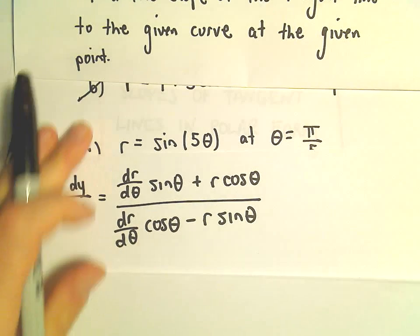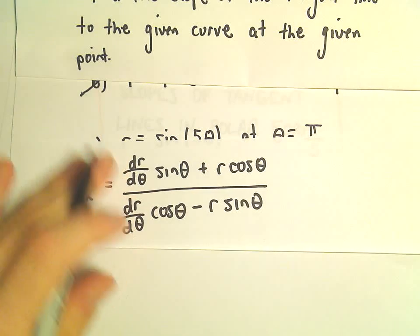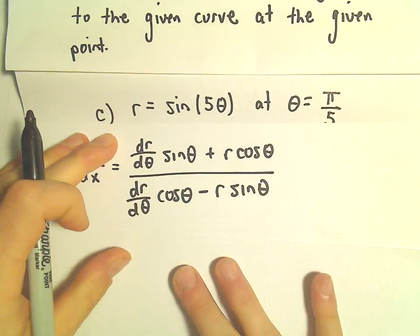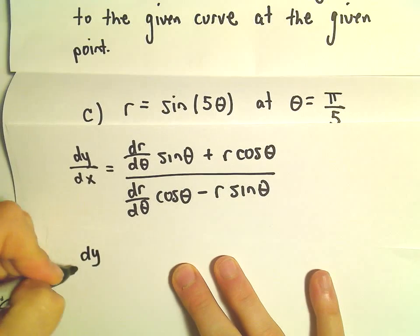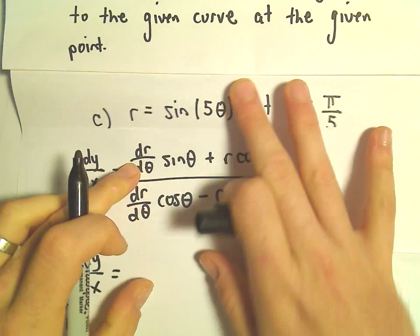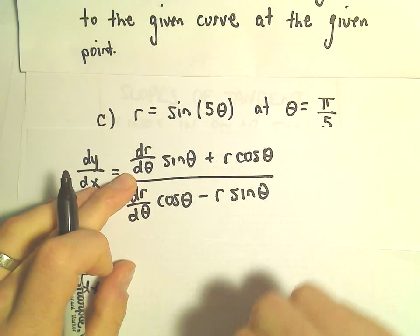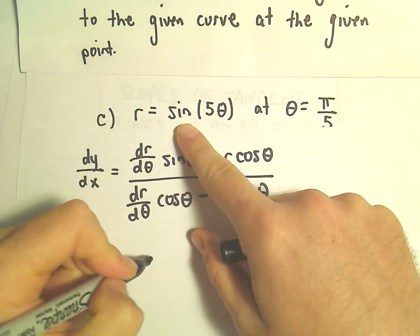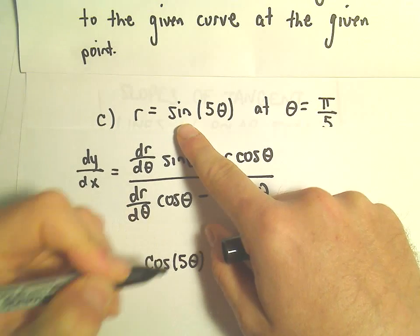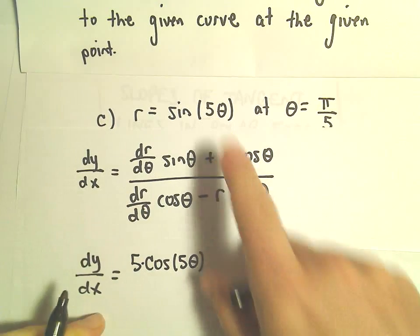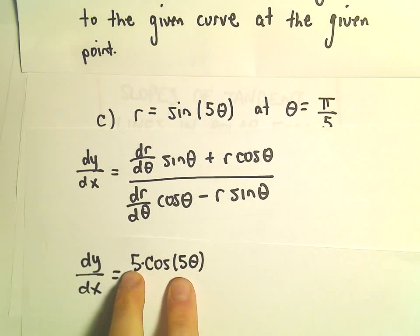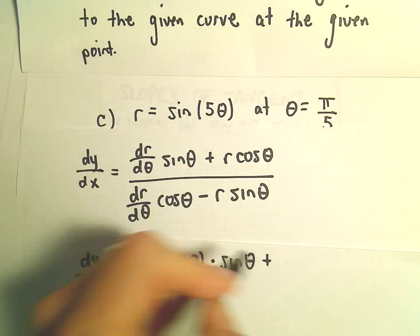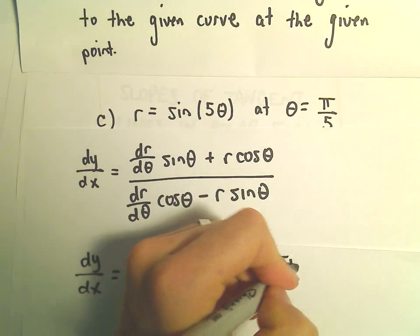When we compute the derivative of y with respect to x, we have to compute the derivative of r with respect to θ. So when we take the derivative of sine of 5θ, we get cosine of 5θ, but then by the chain rule we multiply that by 5. So there's our dr/dθ, and then we multiply that by sine θ, plus we take our r, which is sine of 5θ.